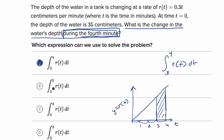You might have been tempted to think the fourth minute is after T equals four, but that would be the fifth minute. Another choice integrating from zero to four would give the change over the first four minutes, not just during the fourth minute. And integrating from three to three equals zero — there's no time that passes from three to three, so it didn't change at all. You can rule all of those out.